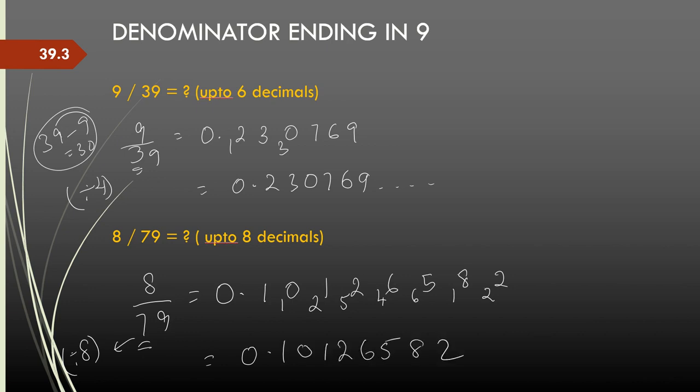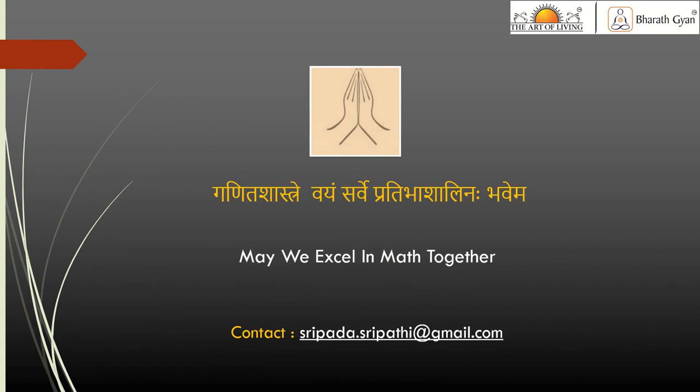This is how I can very easily calculate the decimals of fractions where the denominator ends in 9. I have given a few problems to try — please do try them out. You will also find the workings on the Bharat Nyan website. In case you have any clarifications or suggestions, please do write to me. Thank you.